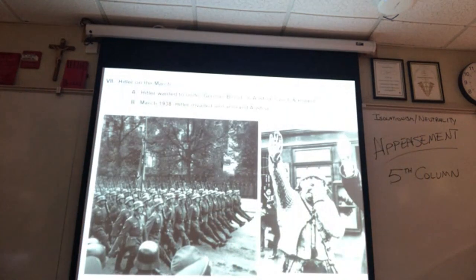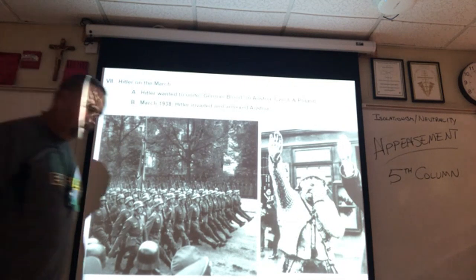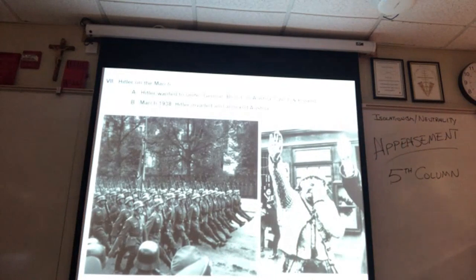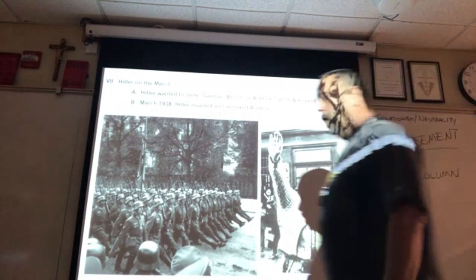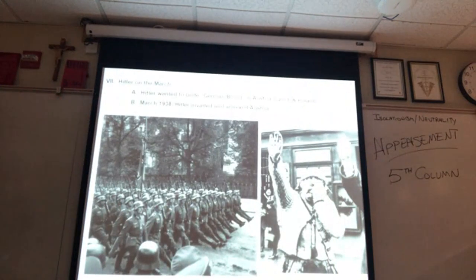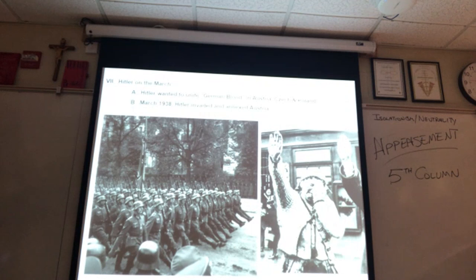Hitler amasses his army at the border with Austria. The fifth column in Austria is very strong — of course, it's Hitler's home country. He has built up relationships with people inside Austria and used propaganda against the Austrian government.